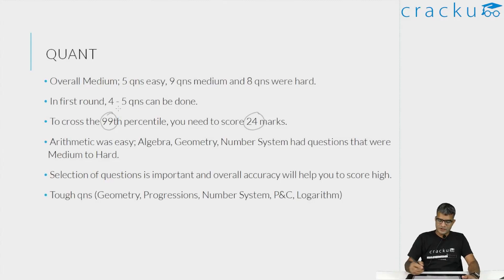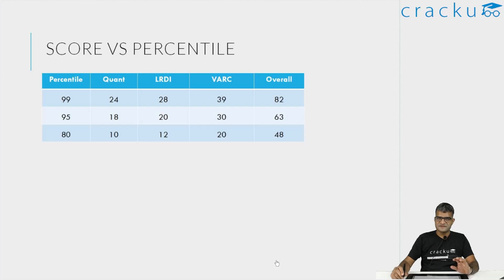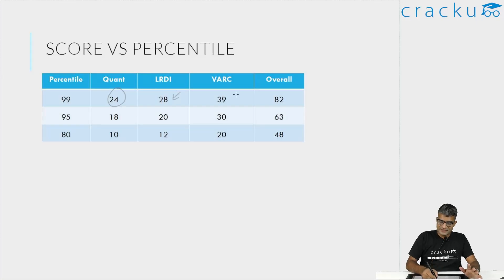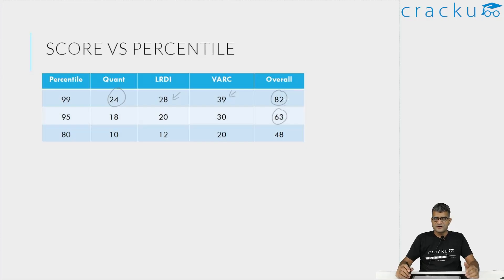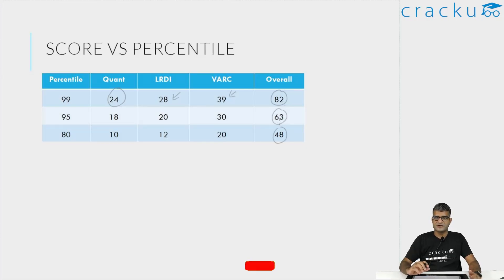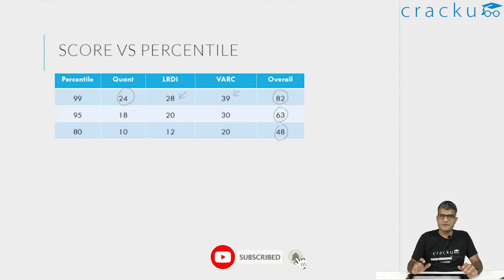Looking at the overall percentiles, this was a slightly difficult Dashcat, especially because of quant. But at least a few LRDI sets are easy and the verbal section was not very difficult. So overall, to score 99 percentile, a score of 80-plus would be good. To score 95 percentile, you should score above 60. And for 80 percentile, around 45 to 50 marks would be the mark. If you have any doubts with respect to your CAT preparation, please comment below this video.